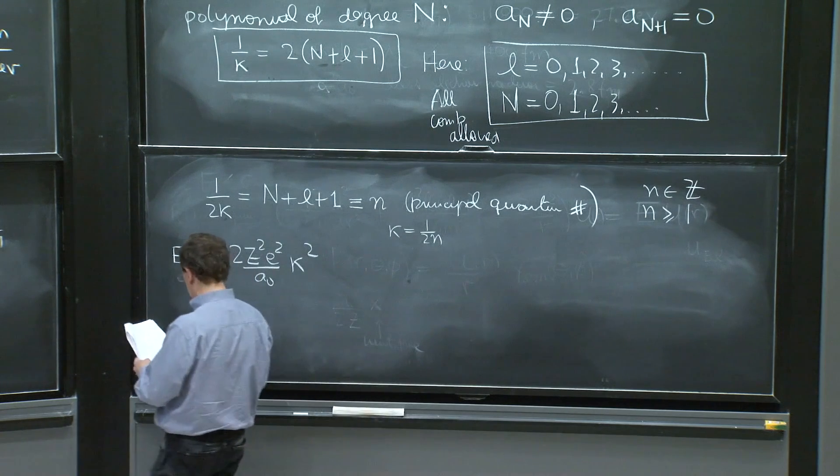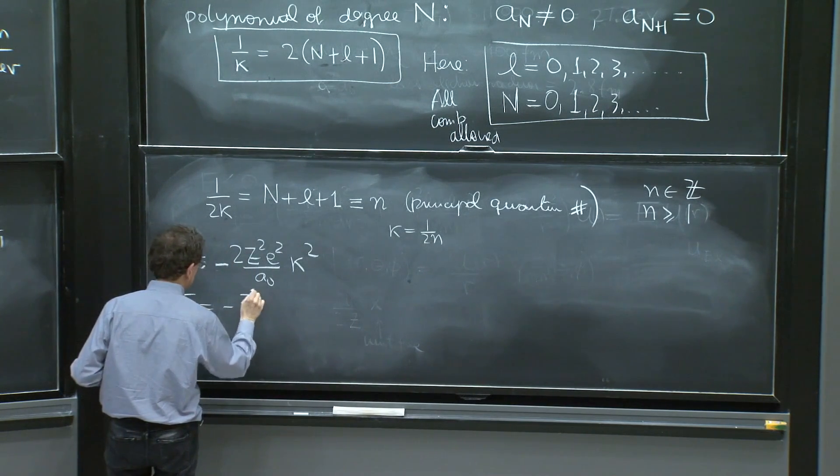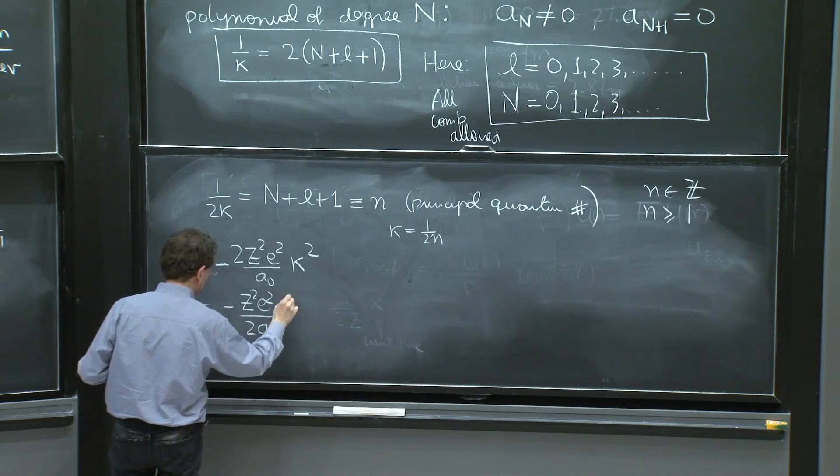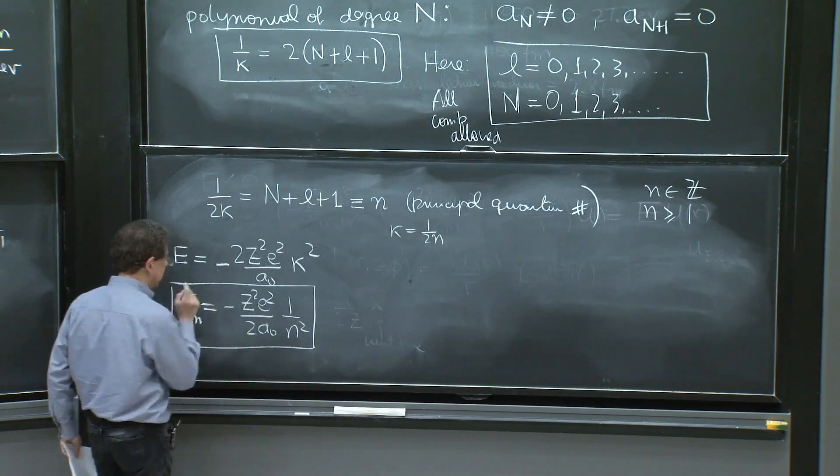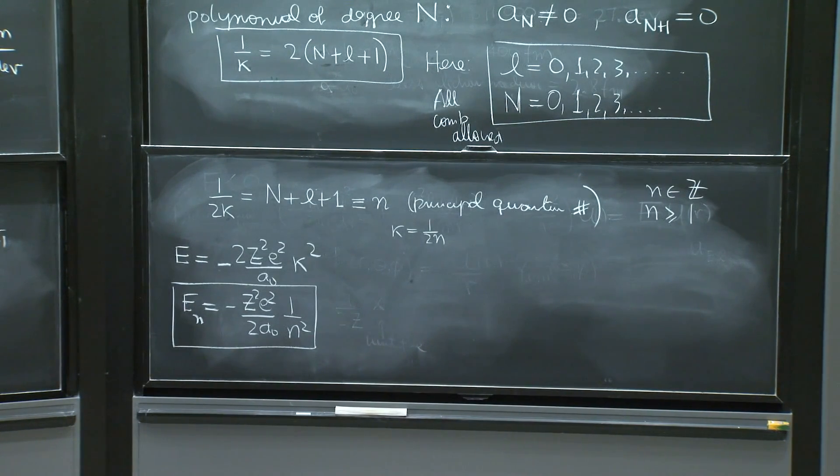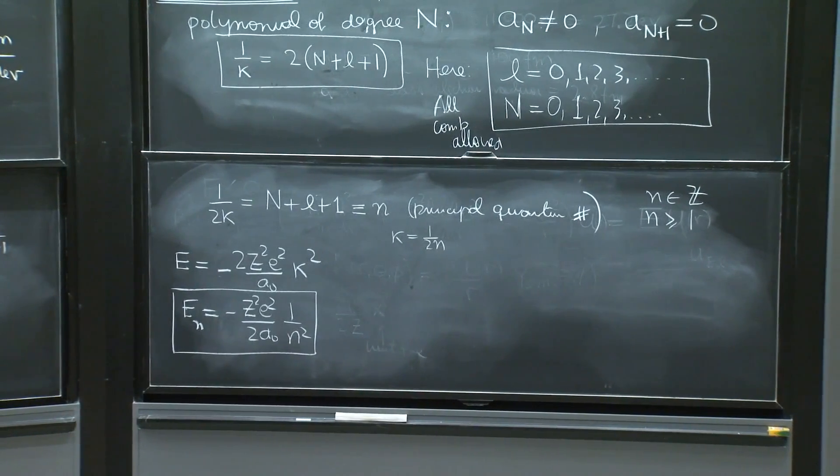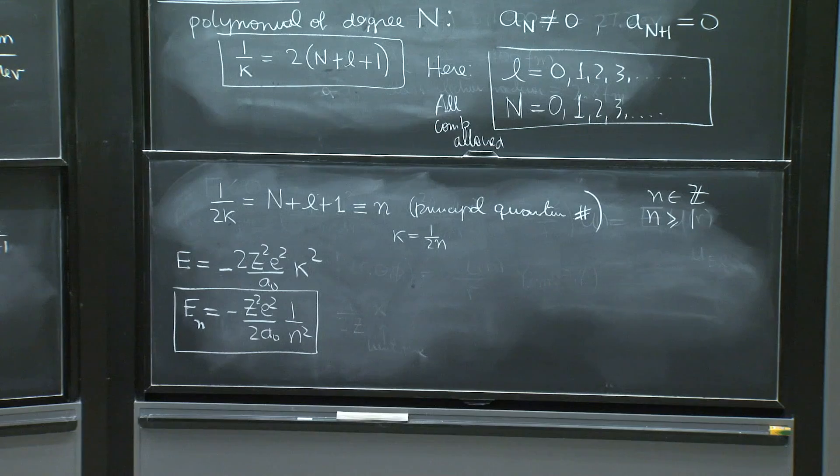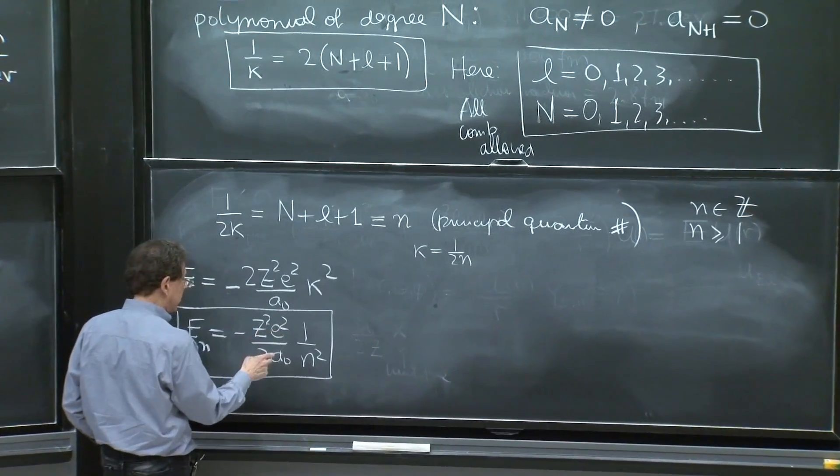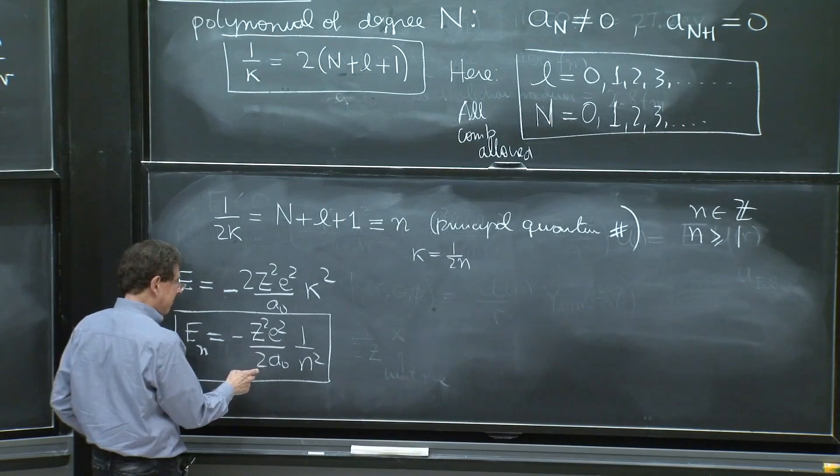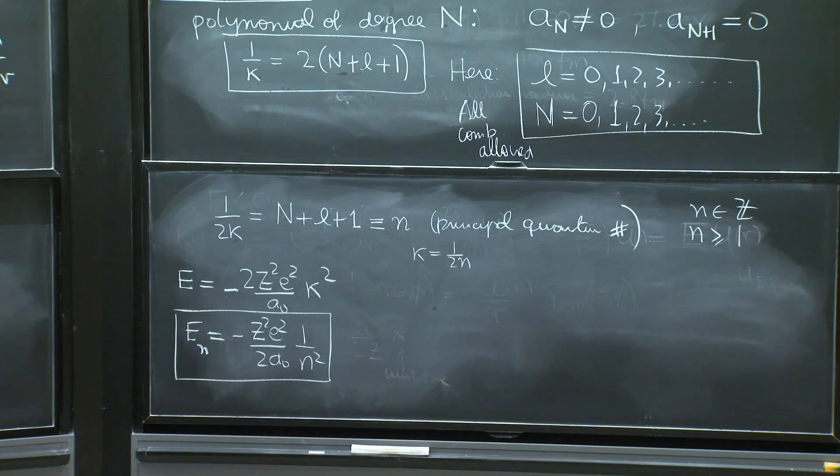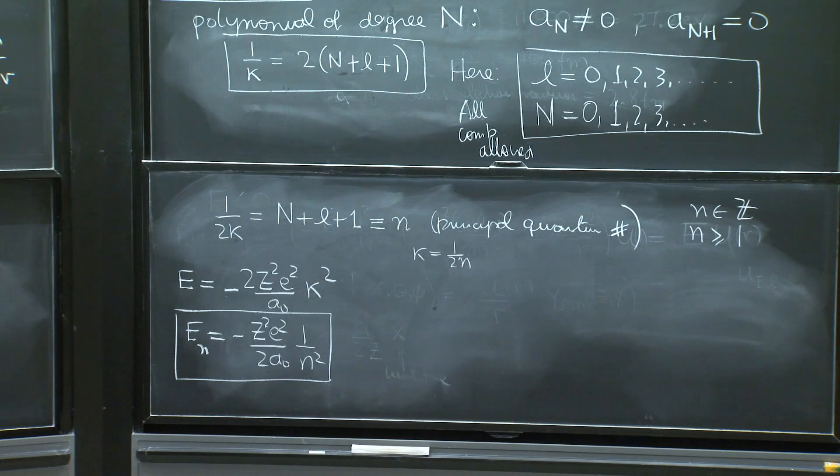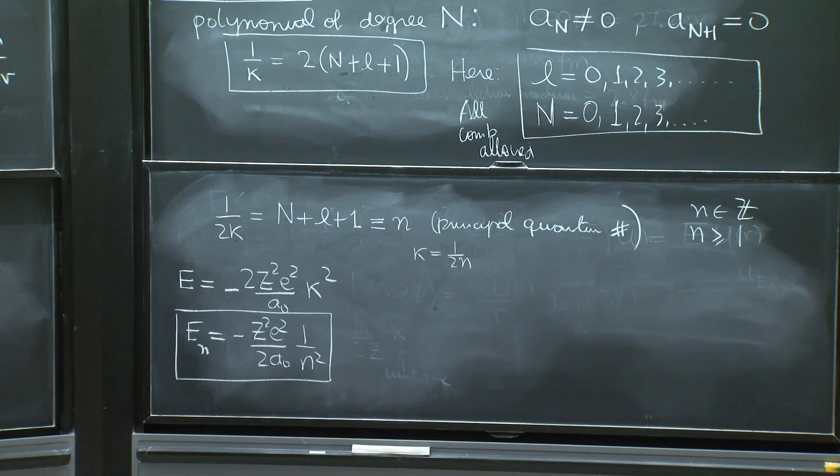So when we substitute here, we get e is equal to minus z squared, e squared over 2a0, 1 over n squared. It's probably the most famous formula that you certainly have studied in high school. The 1 over n squared of the energy levels of the hydrogen atom. The units are nice. For z equals to 1, there's the e squared over 2a0 that we mentioned a little while ago as giving you the characteristic energy. And e squared over a0 was 27.2 eV. And therefore, e squared over 2a0 is the famous 13.6 eV.